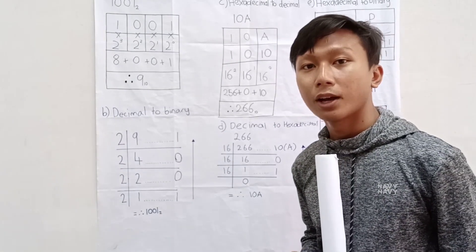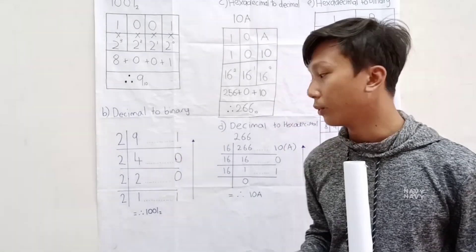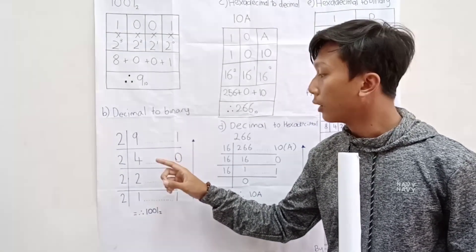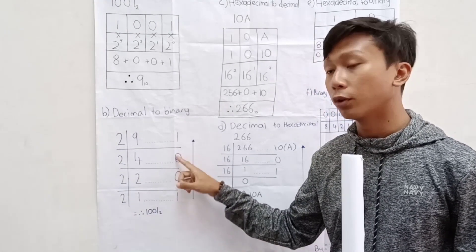And to do this, we just need to divide it by 2. So, 9 divided by 2 is 4.5, right? Therefore, the 0.5 will be 1.